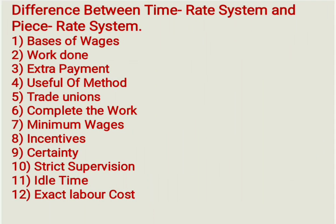Point 4 — Usefulness: Time Rate System is useful where quality of work is most important. Piece Rate System is useful where quantity of work is most important. Point 5 — Trade Union: In Time Rate System, trade unions favor this method because no distinction is made between efficient and inefficient workers. In Piece Rate System, trade unions generally oppose this method because a distinction is made between efficient and inefficient workers. Point 6 — Tools and equipment: In Time Rate System, tools and equipment are carefully handled because there is no hurry to complete the work. In Piece Rate System, workers are in a hurry to complete work to earn more, which may result in damage to tools and equipment.